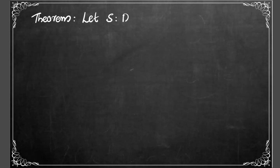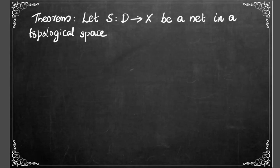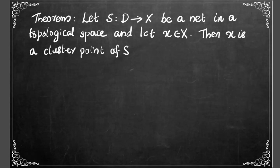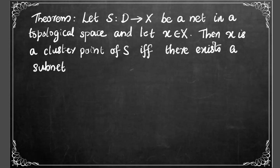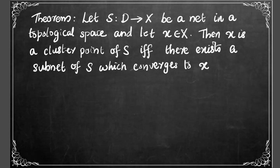Theorem: Let s from D to X be a net in a topological space, and let x be a point of that space. Then x is a cluster point of s if and only if there exists a subnet of s which converges to x in the space X. For the proof, let us first suppose that...